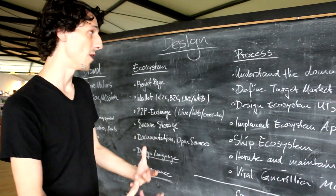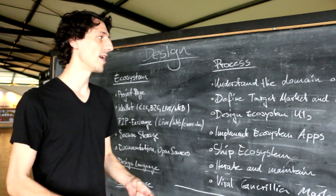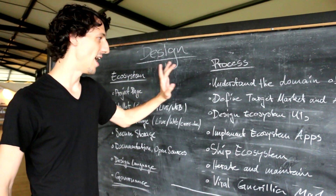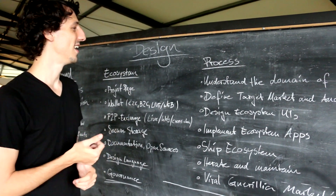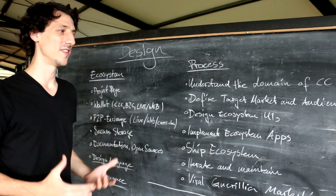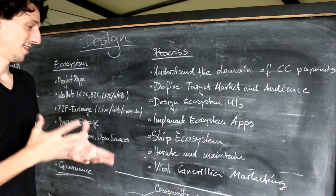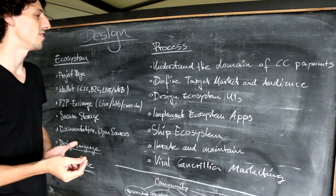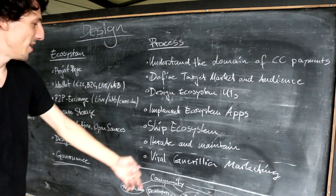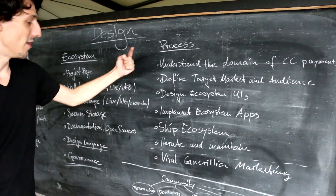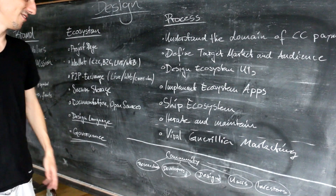The process I see once we start working with product managers, product designers, or UI/UX designers — I don't want to say it's linear, it's entangled. Understanding the domain of cryptocurrency payments is probably most important for designers. Then we define the market and audience we want to target. Once done, we design the UIs, implement them, ship them, and iterate. We'll also start viral guerilla marketing.